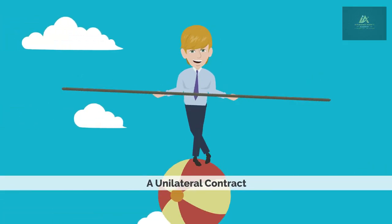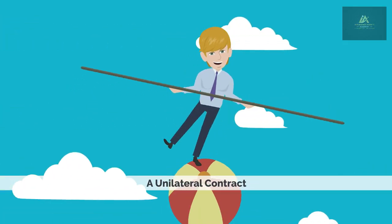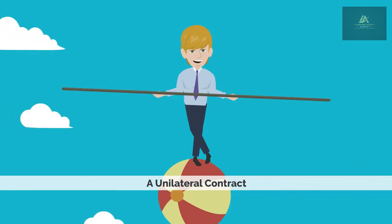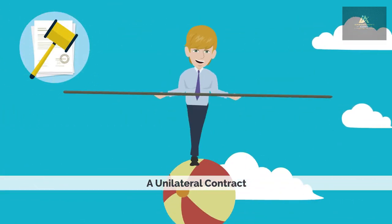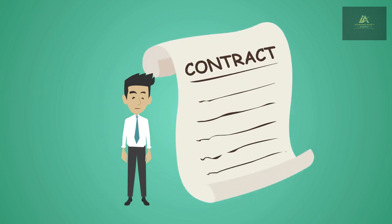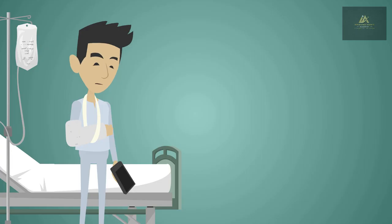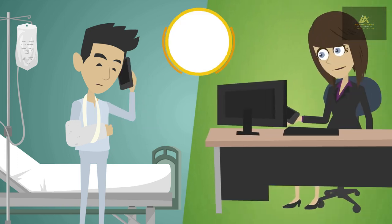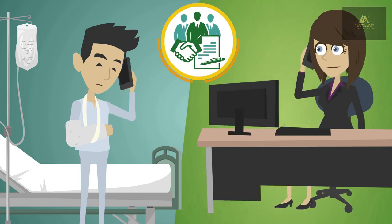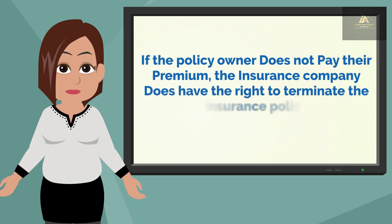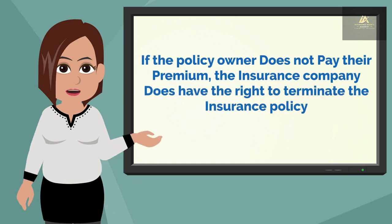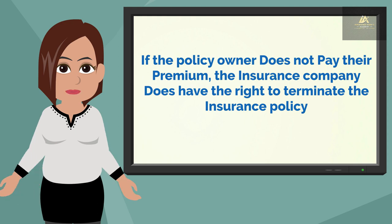Unilateral: a unilateral contract is a one-sided agreement in which only one party, the insurance company, is legally bound to do anything. The policy owner is under no legally binding promise to pay premiums; however, the insurance company is legally bound to pay losses covered by the policy. Please note: if the policy owner does not pay their premiums, the insurance company does have the right to terminate the insurance policy.